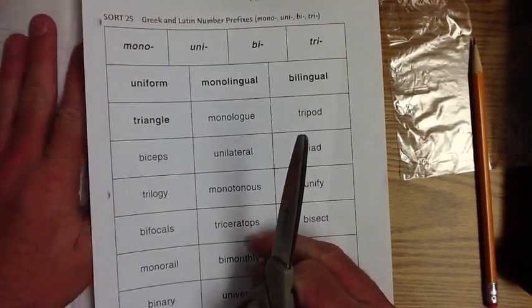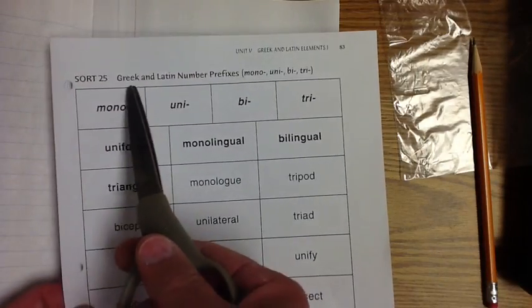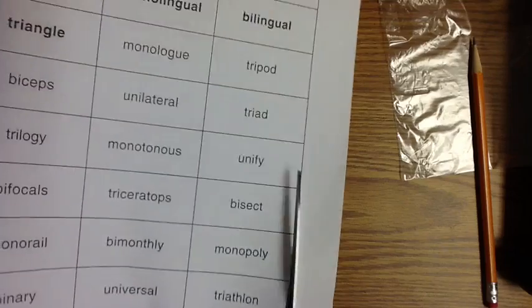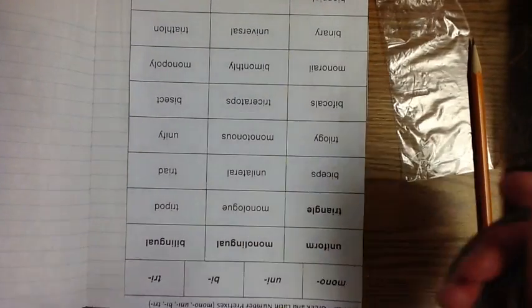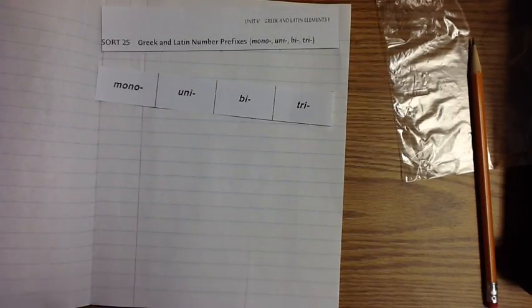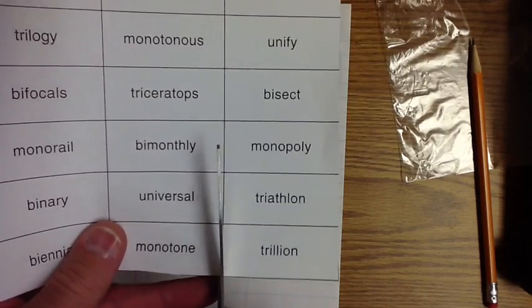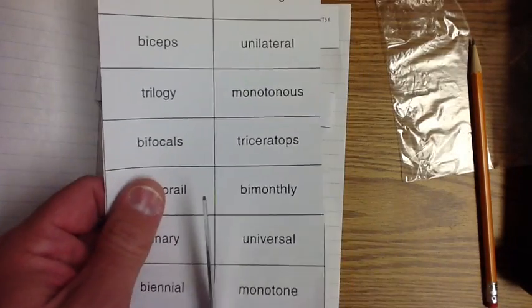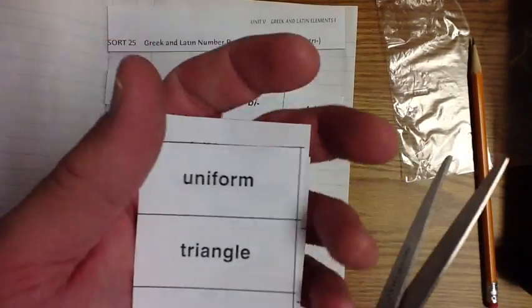Let's get started by cutting out the words. It looks like we're going to be doing some Greek and Latin number prefixes. Go ahead and cut this off on the top because we're going to glue it up on the top of our words. What I like to do is cut off these exemplars and leave them, don't cut them out yet, because I like to keep them together. Then I cut them straight down the top here, straight down right here, and that gives me three that I can go ahead and cut this way.